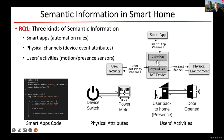For the first question, we found there are at least three kinds of semantic information. One is from smart apps. When we did the research with the Samsung platform, they provided smart app source code. We wrote our own software to analyze the smart app source code and obtained the automation rules from smart apps. If there's no source code, you could do reverse engineering. The other channel for semantic information is the physical channel.